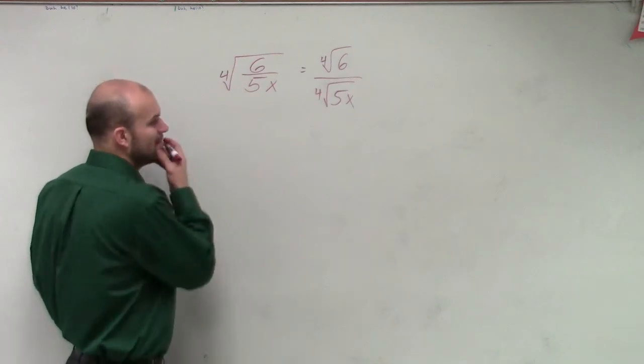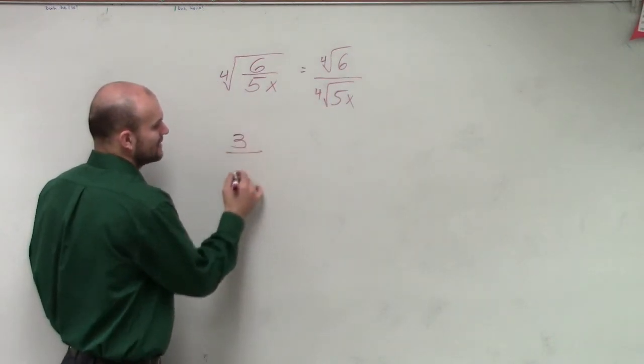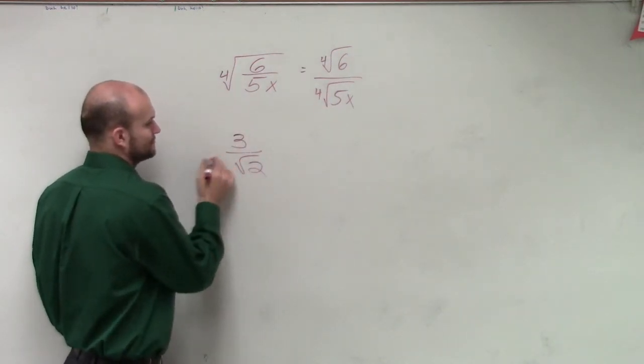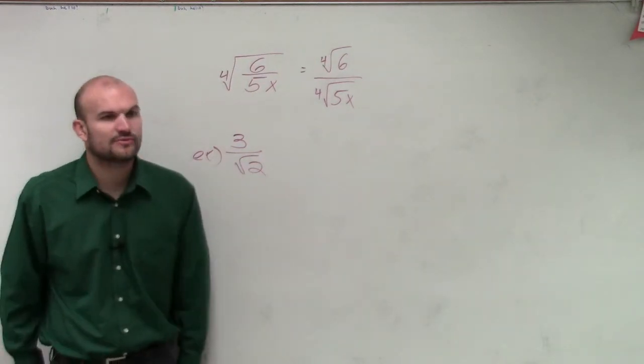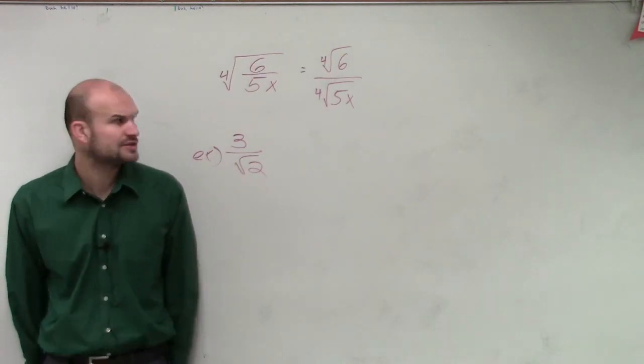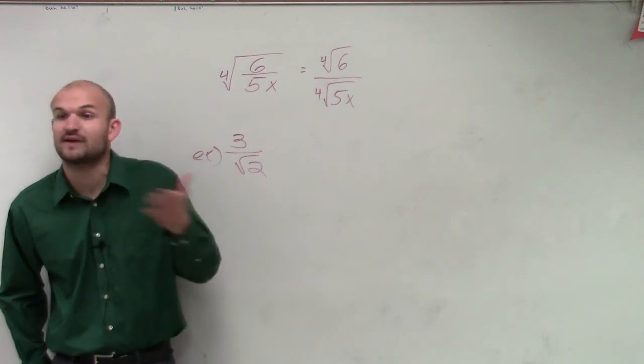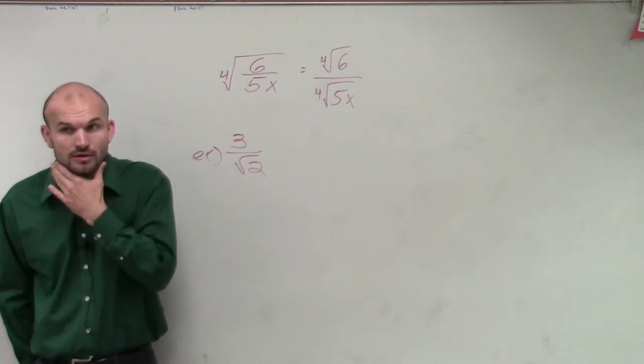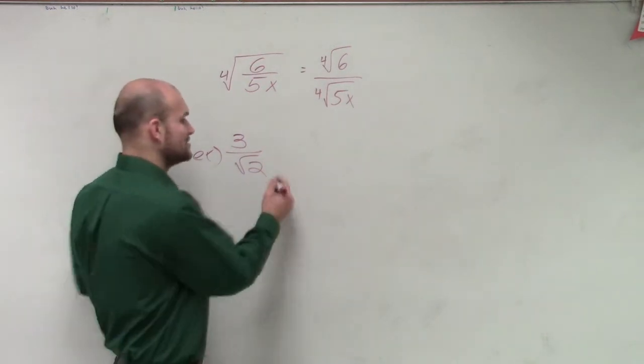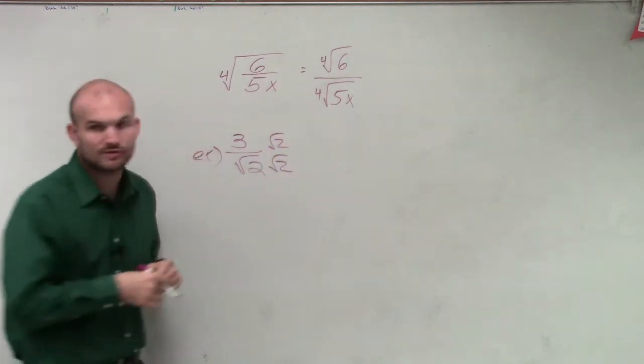Well, one thing I want you guys to remember is, let's say I had a problem like this. Do you guys remember if I was taking 3 divided by the square root of 2? What was one thing I had to do to this problem to make it further simplified? We had to rationalize the denominator, right? So you multiply by the square root of 2 over 2.